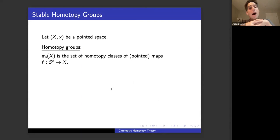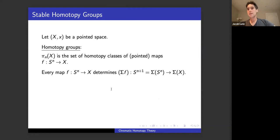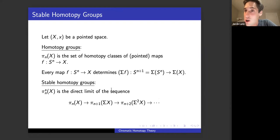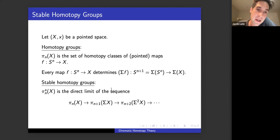Let me remind you that if you have a topological space with a base point, then in algebraic topology, one of the most important invariants of that space is its homotopy groups. The nth homotopy group is the set of homotopy classes of pointed maps from an n-sphere into X. These are related by suspension maps, and by iterating this procedure you can take a direct limit and introduce the stable homotopy groups of X. These are the basic objects of interest in stable homotopy theory — important invariants of topological spaces, but very difficult to compute, even in very simple cases.